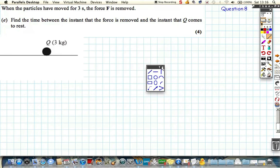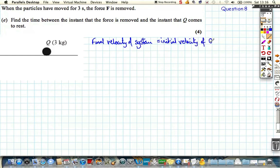Just before we do that, let's find out the speed that Q was moving just before the force was removed and the force F was removed. So that, really, we want to consider the final velocity of the system that was moving when P and Q were connected by that taut string is really the initial velocity of Q.